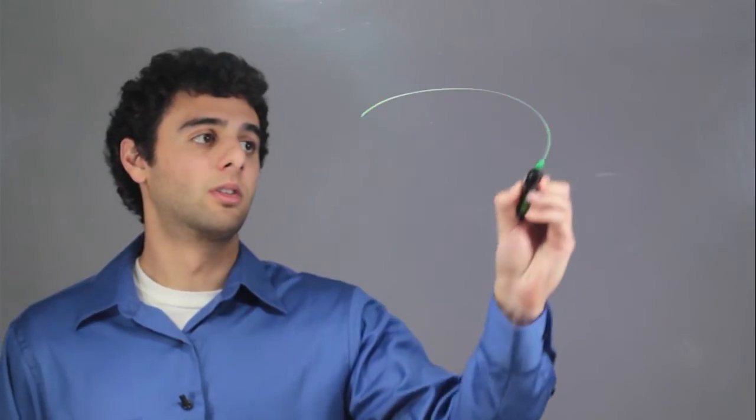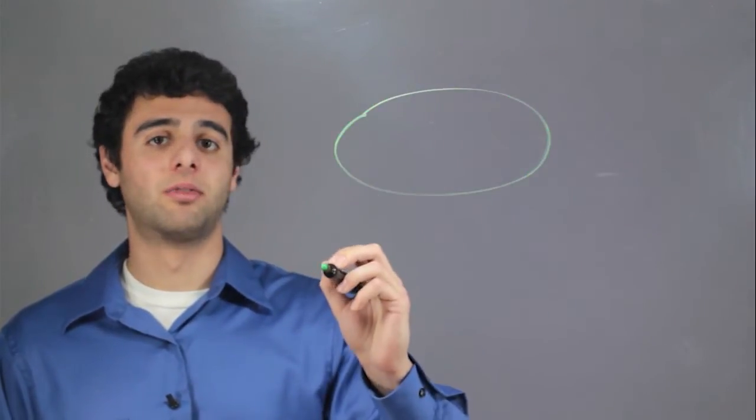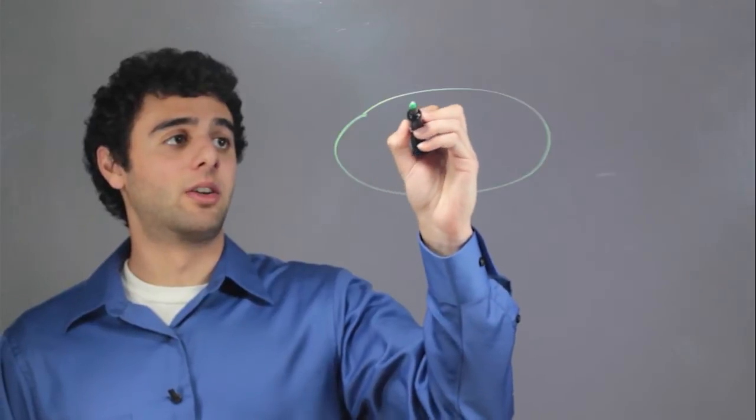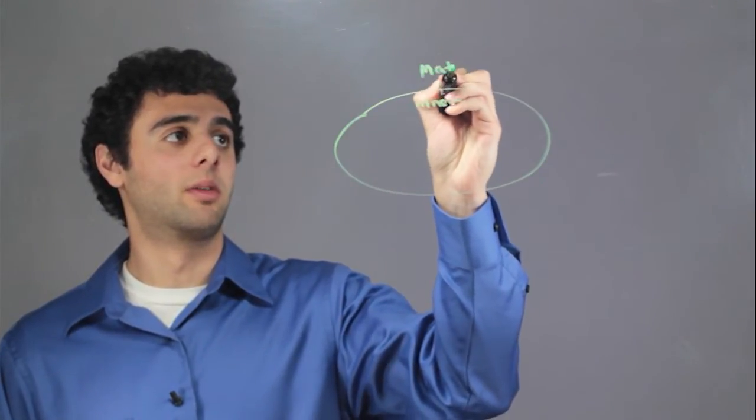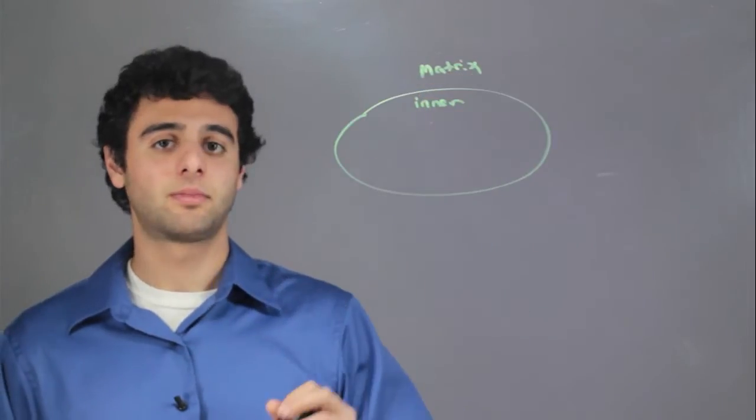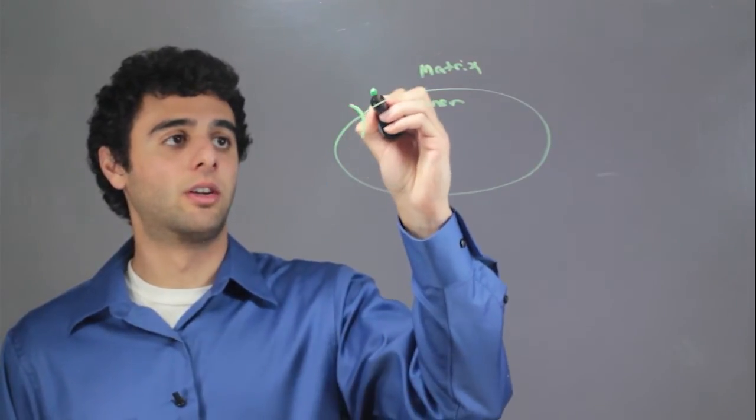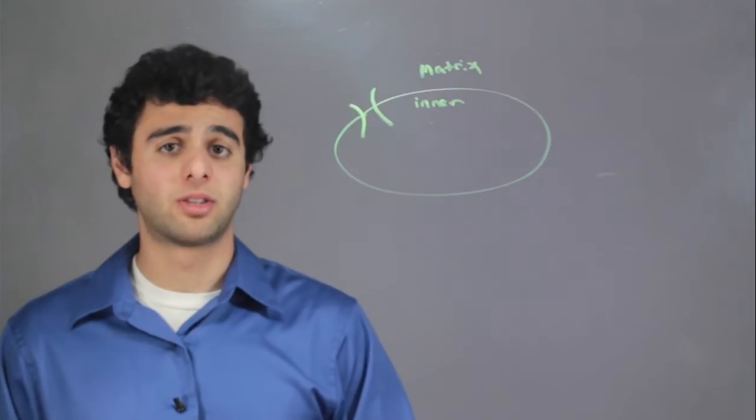The biggest example of proton pumps is in the mitochondria. So here we have the inner mitochondria and here we have the matrix of the mitochondria. Over here we have a proton pump.